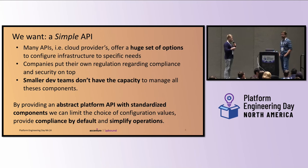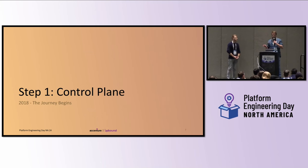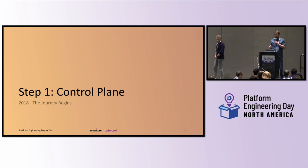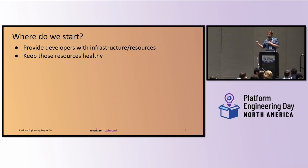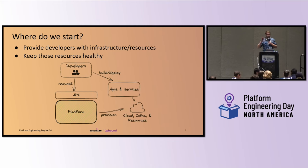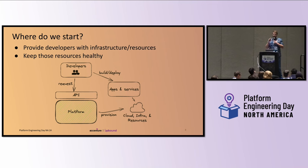So this is what we want to do, and now let's get this journey started. We have finished our pre-flight checks and are ready for step one: creating a control plane. The goals at this point shouldn't be too complicated — we want developers to be able to get some infrastructure and resources in the cloud when they need it, and keep those resources healthy over time. We've got our developers at the top of this diagram, and we're going to build something for them to request infrastructure from the platform, which will then go and provision the cloud resources on their behalf.